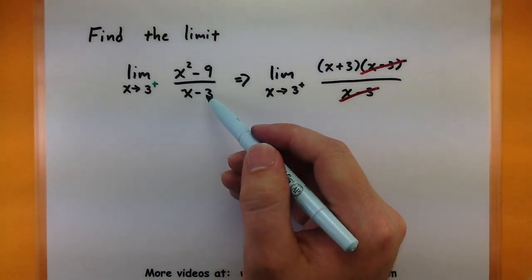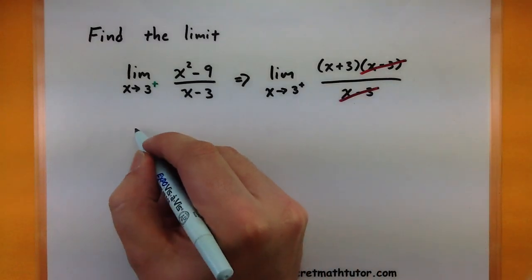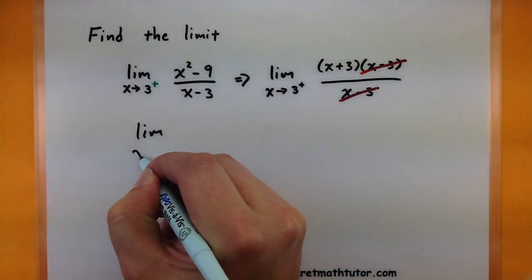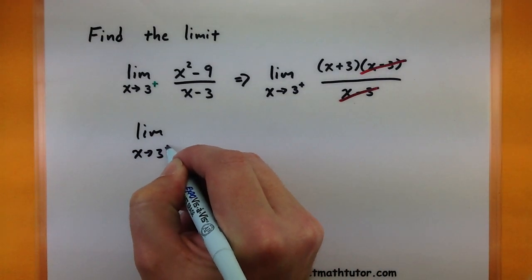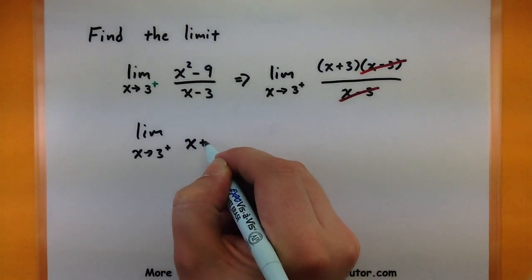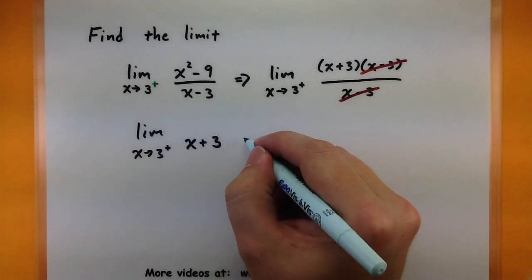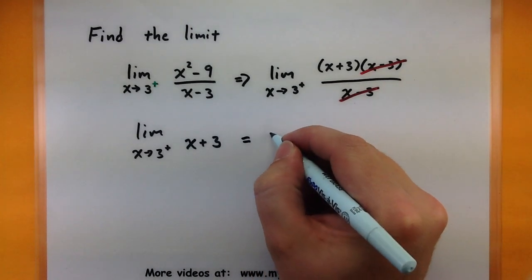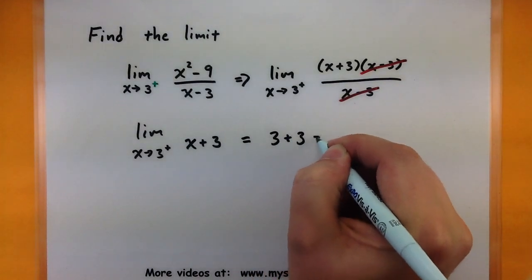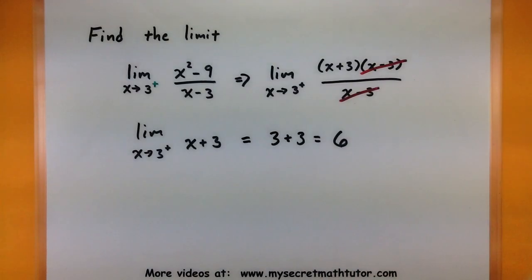So if we need to evaluate this limit, it actually boils down to looking at the limit as x approaches 3 from the right of x plus 3. Now something like x plus 3 is a nice line, it has a slope of 1, goes through the y-intercept at 3. So you can end up evaluating this one-sided limit through direct substitution. Let's just go ahead and put in that 3, and the value of this limit would be 6.